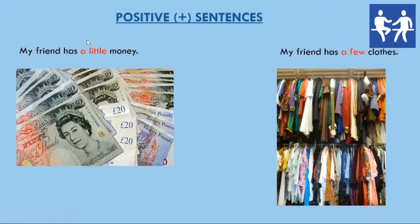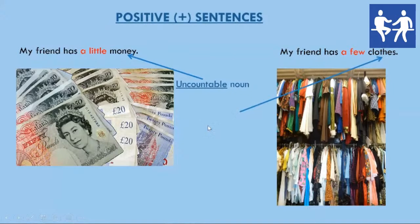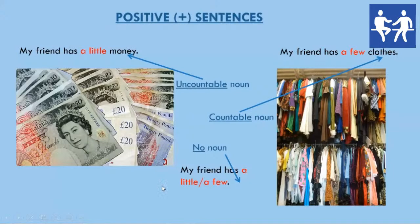Why have we used different quantifiers for money and for clothes? Money is an uncountable noun, so we use 'a little.' Clothes is a countable noun, so the quantifier that we use is 'a few.' If we're not going to use a noun in our sentence, we just say 'a little' or 'a few.'